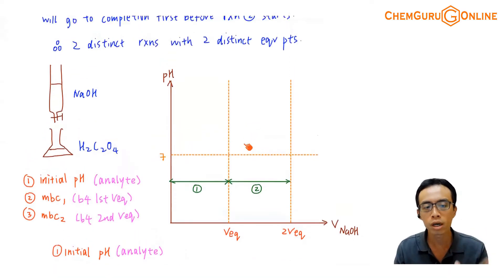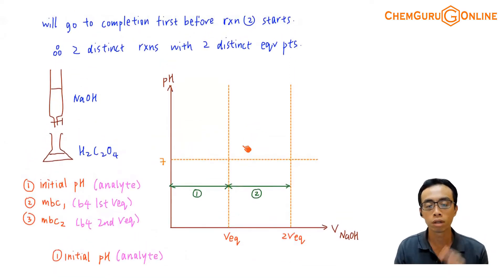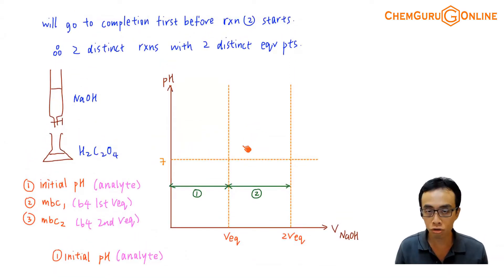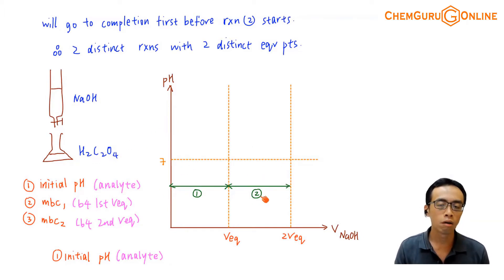The three points that we want to look out for, for diprotic species, will be: the initial pH, the maximum buffering capacity for reaction number 1, and the maximum buffering capacity for reaction number 2.